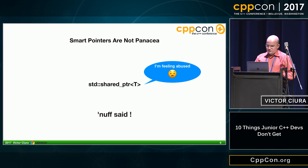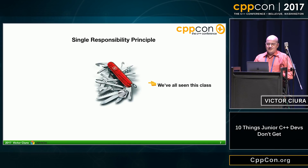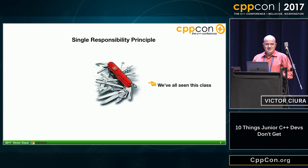Another thing junior developers don't get is that smart pointers are not the answer for everything. I would like to see much less shared pointer. Another thing junior developers don't get is single responsibility principle — I think every one of us has seen a class that looks like this with too much stuff in it.